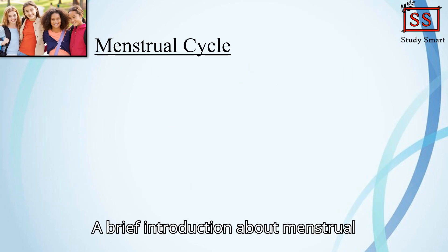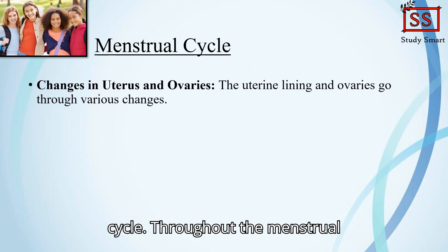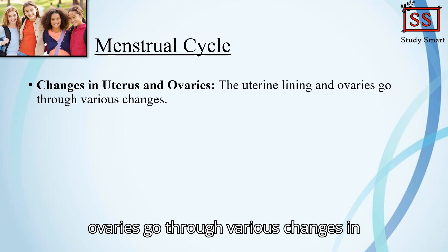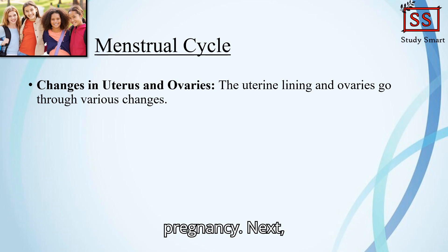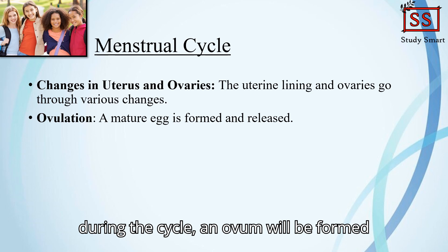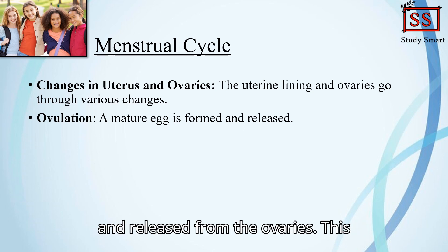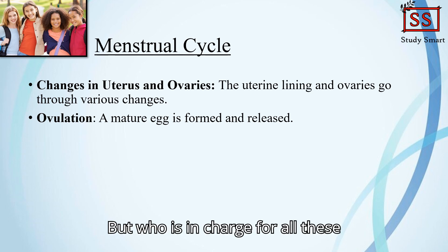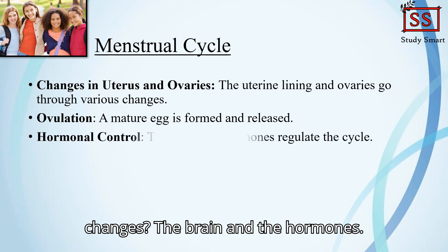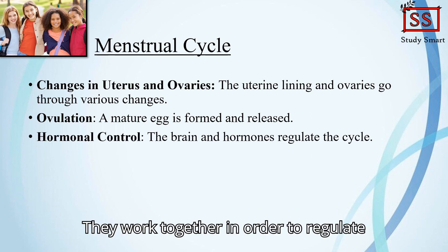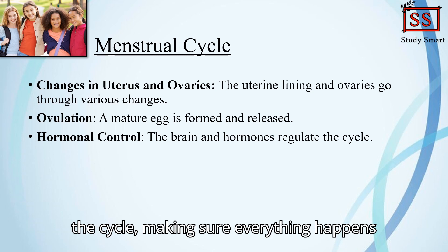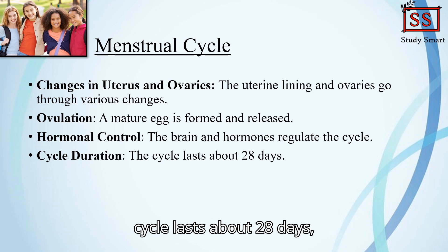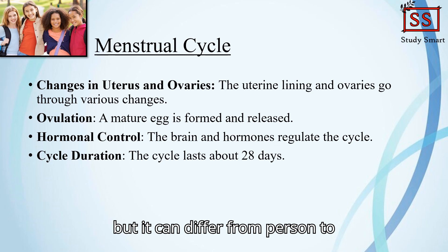A brief introduction about the menstrual cycle. Throughout the menstrual cycle, the lining of the uterus and the ovaries go through various changes in order to prepare for a possible pregnancy. During the cycle, an ovum will be formed and released from the ovaries — this process is called ovulation. The brain and the hormones work together to regulate the cycle, making sure everything happens at the right time. The entire menstrual cycle lasts about 28 days, but it can differ from person to person.